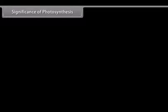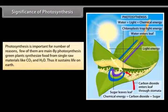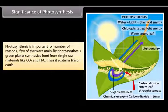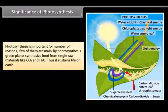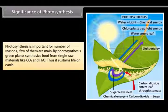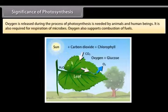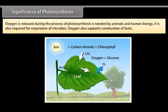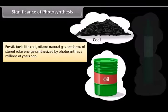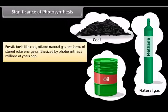Photosynthesis is important for number of reasons. By photosynthesis, green plants synthesize food from simple raw materials like CO2 and H2O, thus it sustains life on earth. Oxygen is released during the process of photosynthesis which is needed by animals and human beings. It is also required for respiration of microbes and supports combustion of fuels. Fossil fuels like coal, oil, and natural gas are forms of stored solar energy synthesized by photosynthesis millions of years ago.